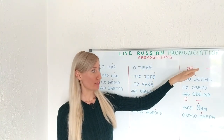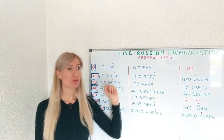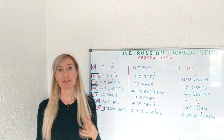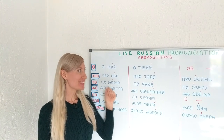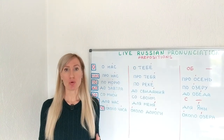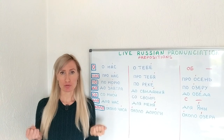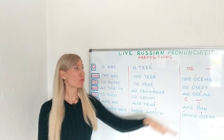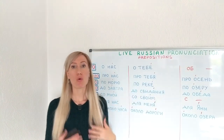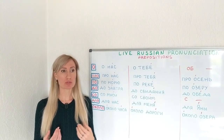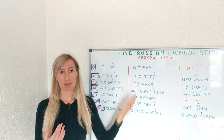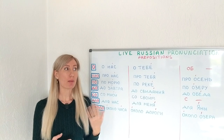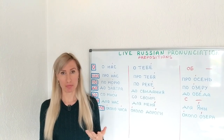In the third column I will put words that start with the same letter that our preposition finishes with. But in the case of the preposition О, we don't have this kind, because as soon as the word starts with О we will use the preposition ОБ — for example АБ ОСЕНИ, about autumn. It sounds like АБ.